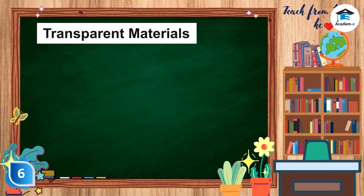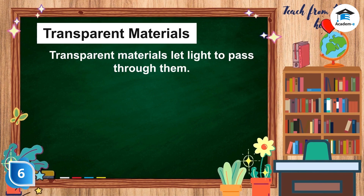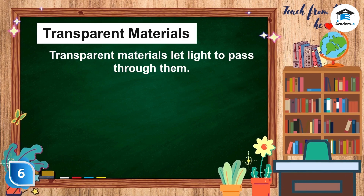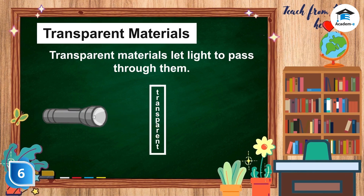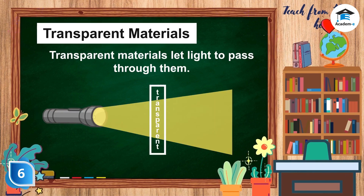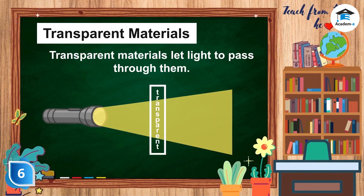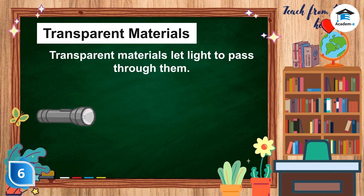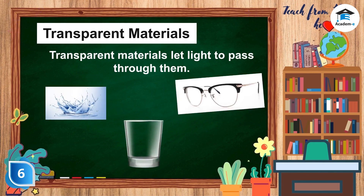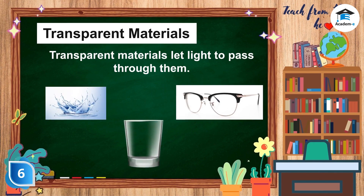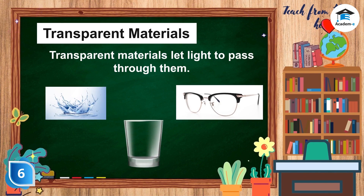Transparent Materials. Transparent materials let light pass through them. When light strikes a transparent material, almost all of it passes directly through the material. Air, water, clear glass, and eyeglasses are examples of transparent materials.